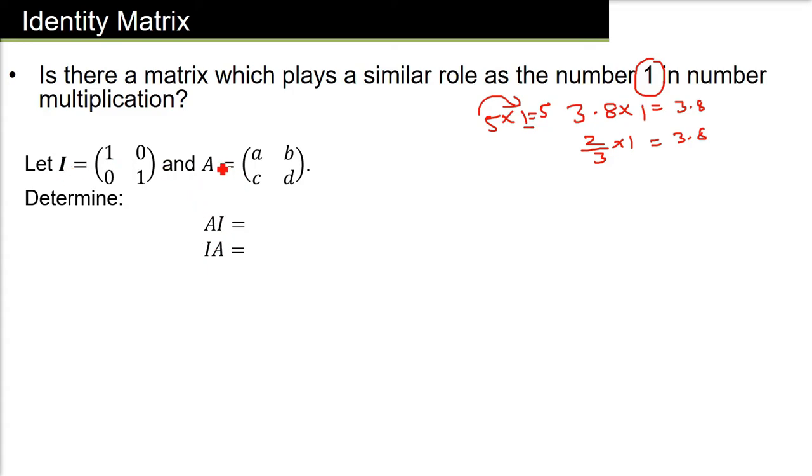This A is our matrix, 2 by 2 matrix. And A into I we are doing, I we have taken as a matrix, 2 by 2, with the diagonals as 1, others are 0. So I am writing A here. Then I am multiplying this with the identity matrix. 1, 0, 0, 1. Please remember the diagonals are 1, others are 0.